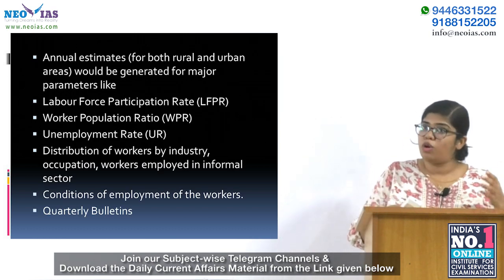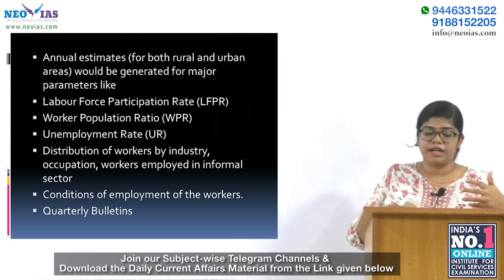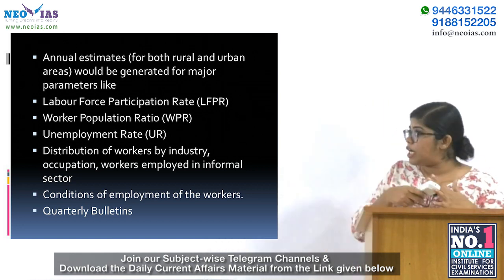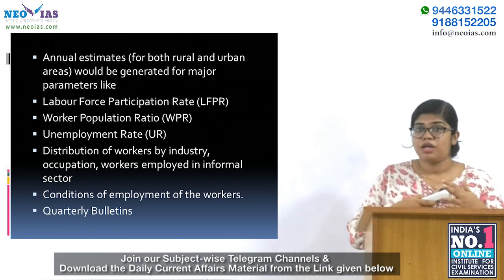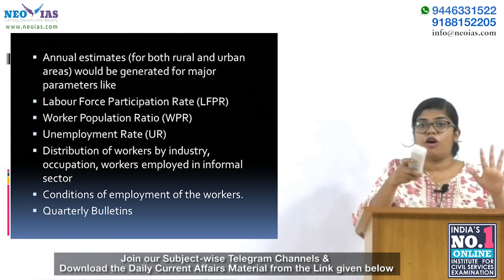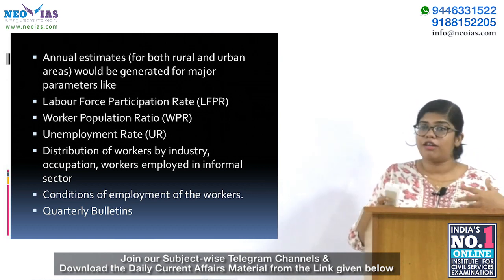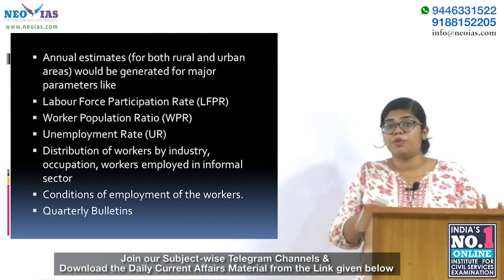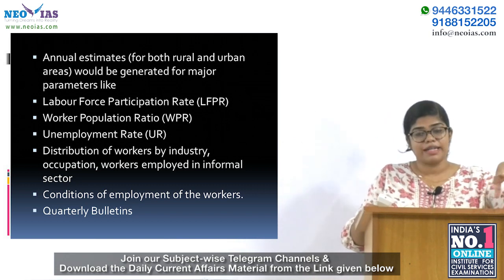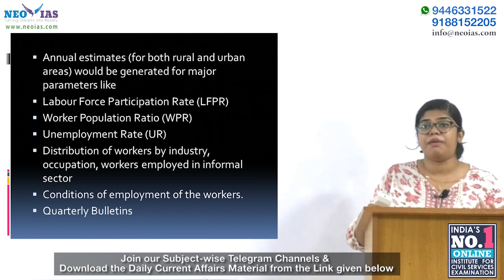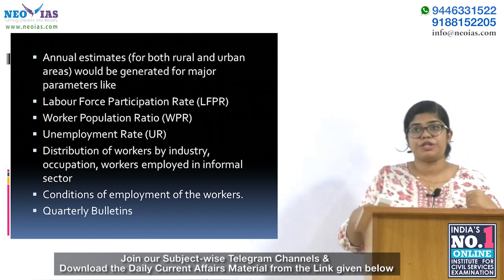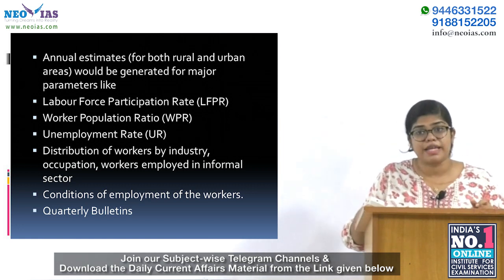The annual estimates for both rural and urban areas are generated for parameters like labour force participation rate, worker population rate, and unemployment rate. It also covers distribution of workers by industry and occupation in the informal and formal sectors, and the condition of employment of workers. Quarterly bulletins are also released covering quarterly estimates of labour force parameters like the labour force participation ratio, worker population ratio, and unemployment rate.